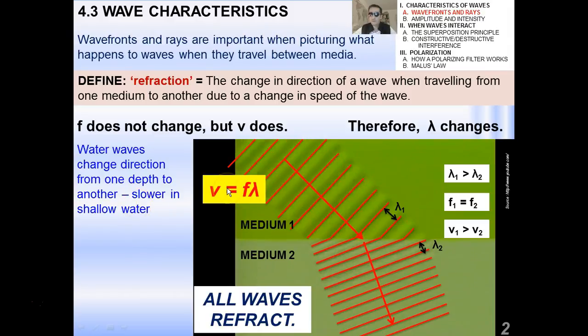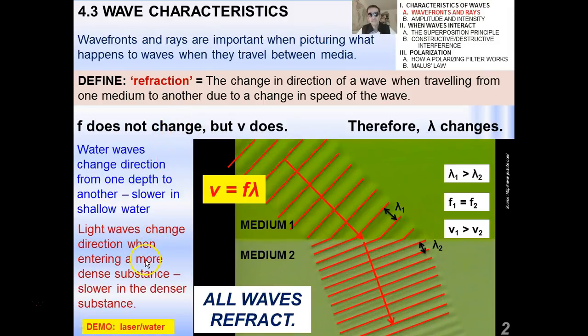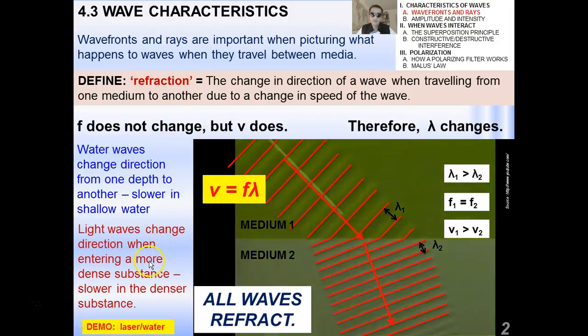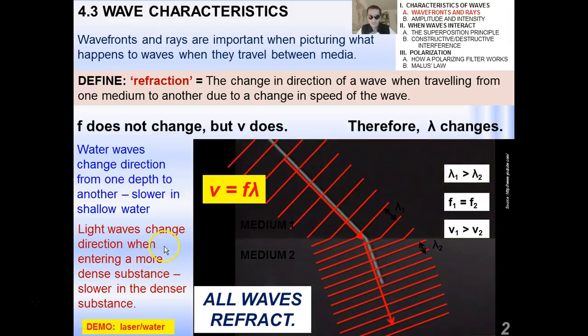Now, light waves, they change direction when entering a more dense substance, which we've alluded to in class. So, it turns out that light actually slows down in the denser substance. And we've done some stuff with lasers and water and black glass and so forth. This is a really important slide.